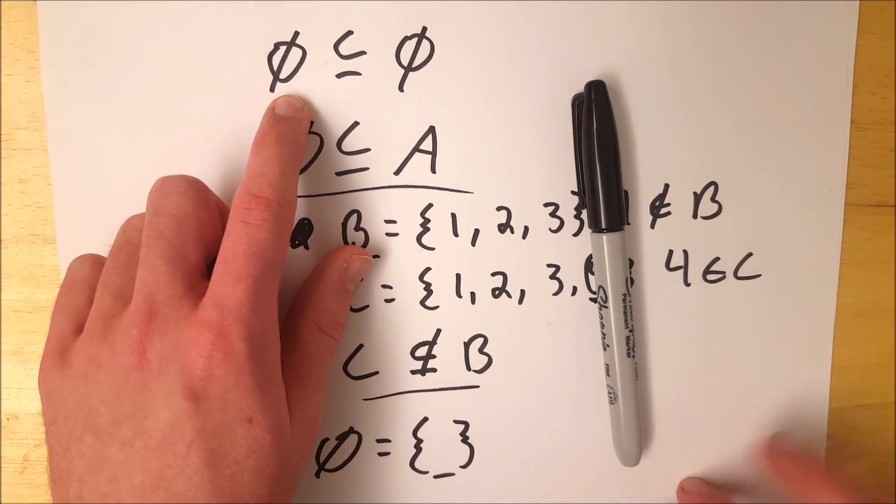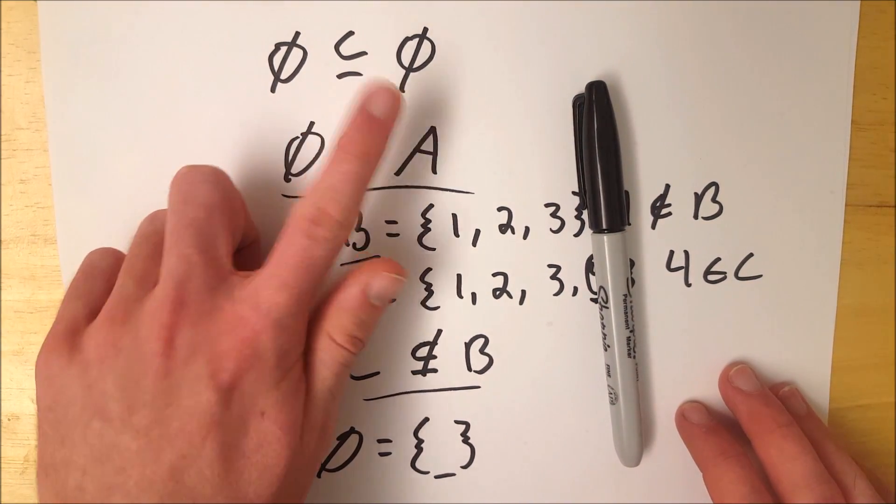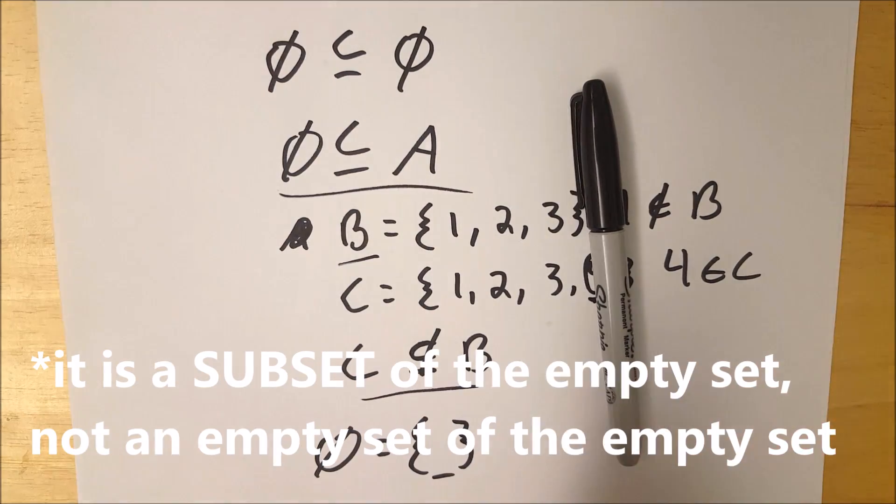And similarly, the empty set doesn't have any element in it that the empty set doesn't have. So again, it is a subset of the empty set as well as every single other set.